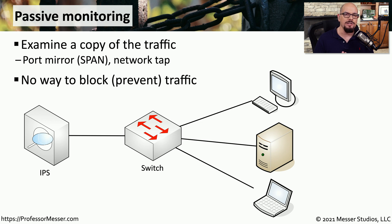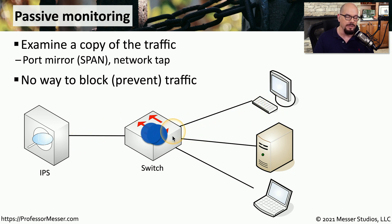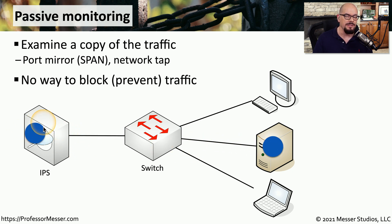One way to connect an IDS or IPS to your network is through a passive monitoring system. You might have an IPS off to the side that is receiving information from a switch redirecting traffic from other devices on the network. This can be done with a port mirror — in the Cisco world that's called a switch port analyzer or SPAN — or it may be a physical network tap. A copy of that traffic is sent to the IPS, which then examines it to see if there are any known attacks. If there are, an alert or message is displayed so that the system administrator can decide what to do next.